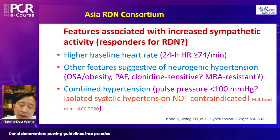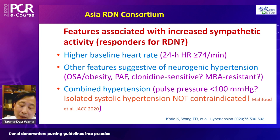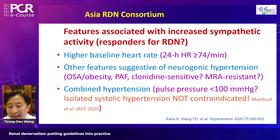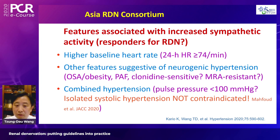Features associated with high sympathetic tone include: a high baseline heart rate greater than 74 beats per 24 hours, and clinical features such as obesity, obstructive sleep apnea, paroxysmal atrial fibrillation, clonidine sensitivity, and aldosterone antagonist resistance — all of which are markers of sympathetic overactivity and indicate likely responsiveness to renal denervation.